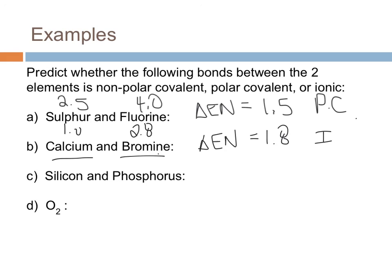The next one, silicon and phosphorus. Silicon is 1.8, phosphorus is 2.1. So if we take the difference, 2.1 minus 1.8 gives us 0.3. Technically a polar covalent bond, but it's not going to be very polar.